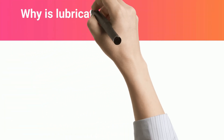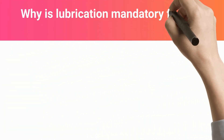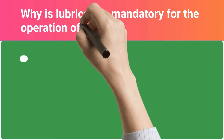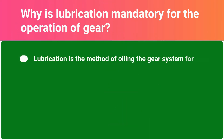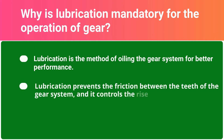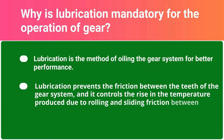Why is lubrication mandatory for the operation of gear? Lubrication is the method of oiling the gear system for better performance. It prevents friction between the teeth of the gear system and controls the rise in temperature produced due to rolling and sliding friction between the teeth.